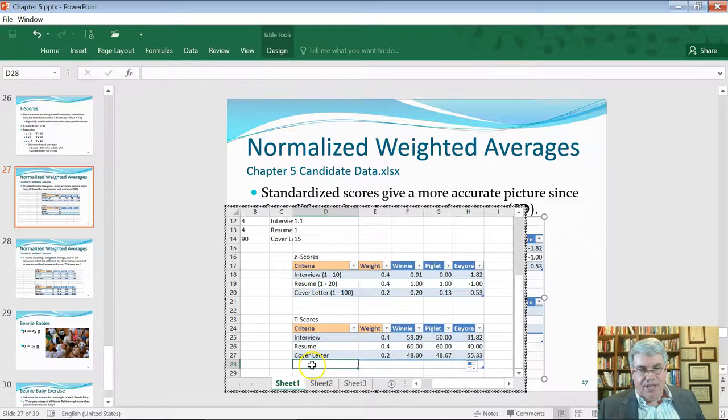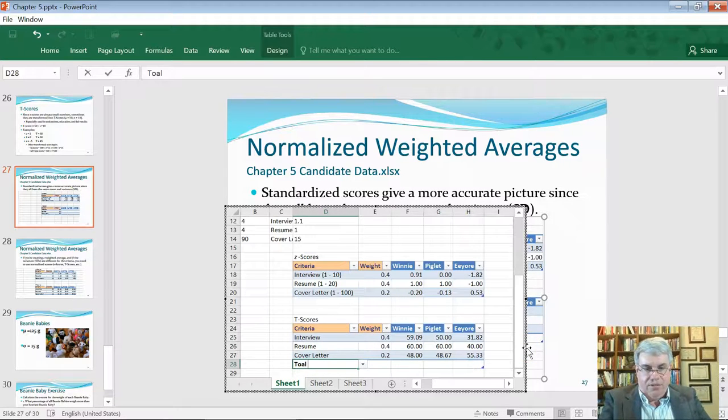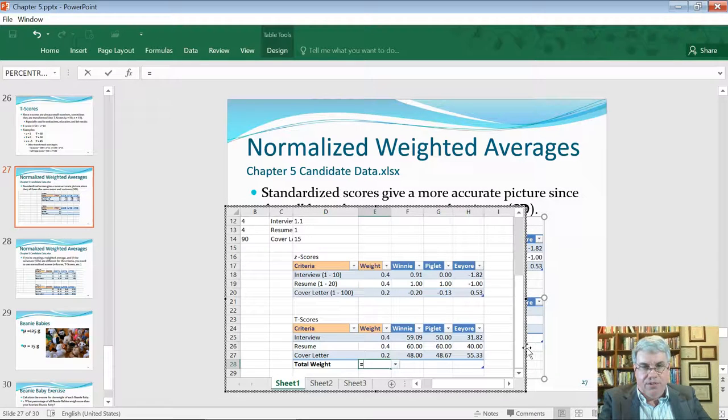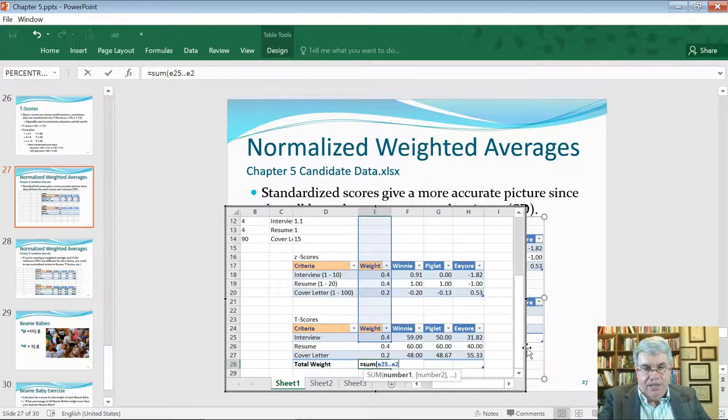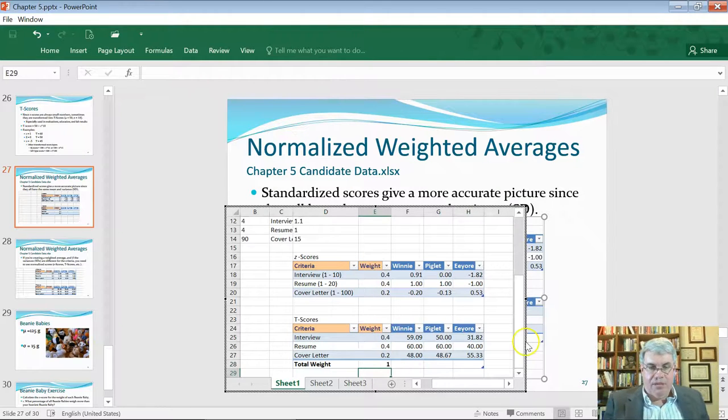Now, let's calculate the total weighted average. Let's calculate the total weight first. Total weight. I'm going to put that there. And I'm going to say that's going to be equal to the sum of E25, E25, dot, dot, E27, those three numbers. So, we've got a total weight of 1, 100%. That's what we wanted.